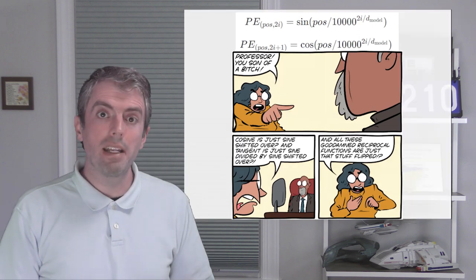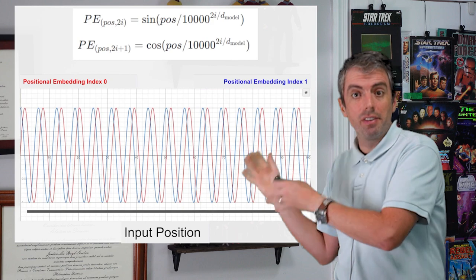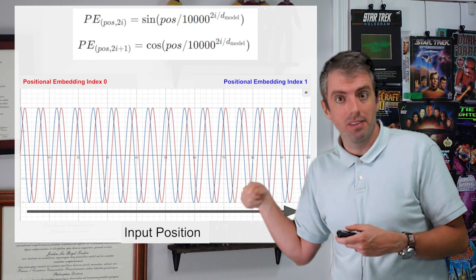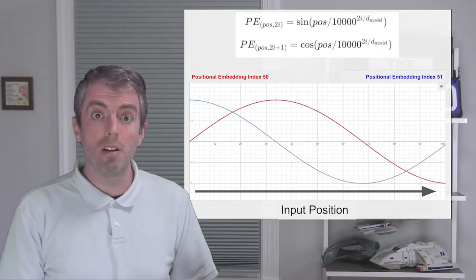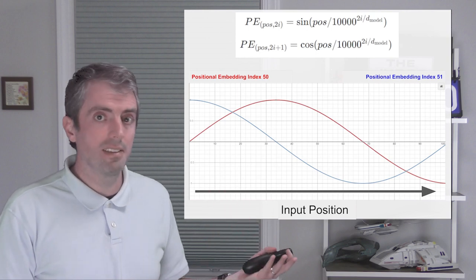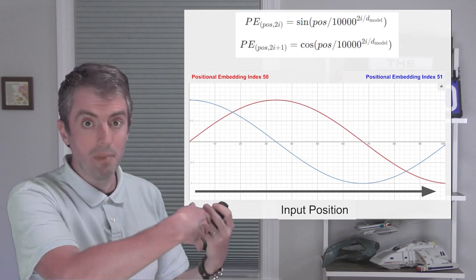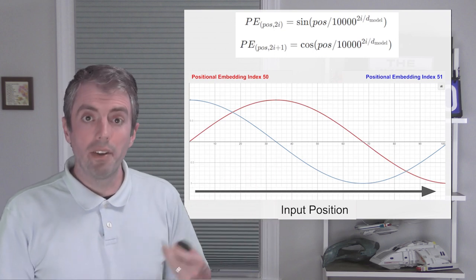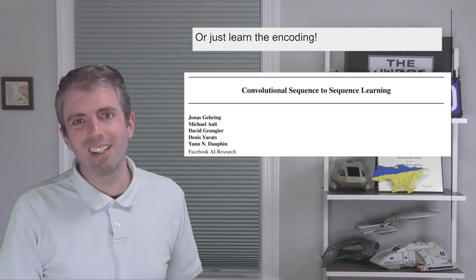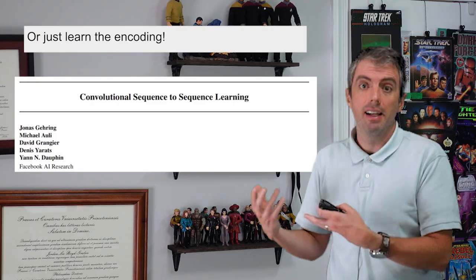For lower indices, the embeddings are flipping back and forth between minus 1 and positive 1 pretty frequently. This allows the model to capture fine-grained differences, whether it's in the second position or the third position. For much higher indices, the curves move much more gradually, so you can distinguish between the start of a sentence and the end of a sentence. And there are lots of things in between for medium levels of granularity. Although that's how it's done in the original transformer, you can also just learn the positional embeddings from scratch — but that does take a little bit more time, and it also prevents you from running on inputs of a size that you haven't seen before.